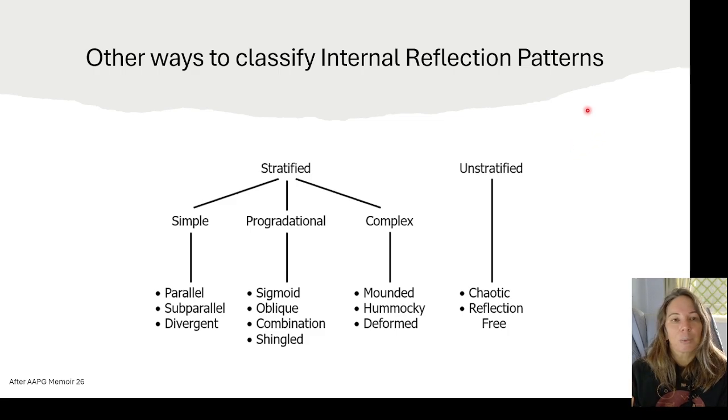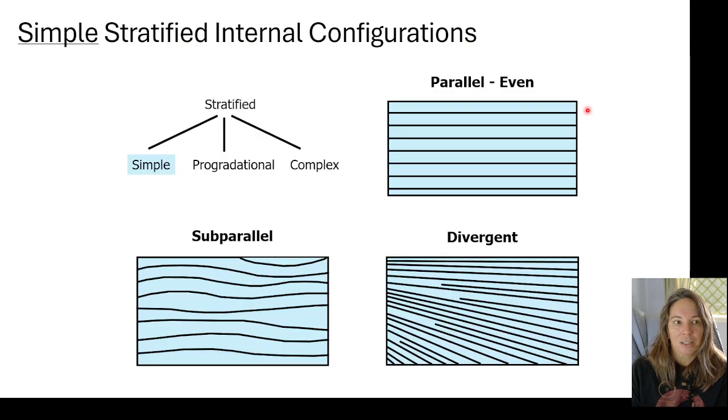There's a lot of different ways to classify internal reflection patterns. I'm going by the classic AAPG way of doing it, in terms of having different stratified reflection patterns and then unstratified. I'm going to walk through these with our very simple stratified internal configurations. You can have your parallel where things are very even. Now we see the cartoons of the words I used a few slides ago. We've got subparallel, we've got divergent. All of these are nice, standard, simple configuration patterns.